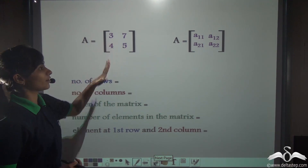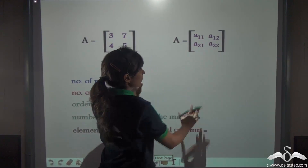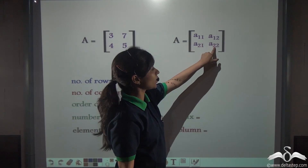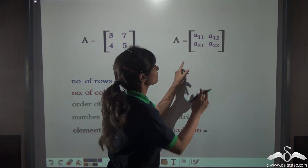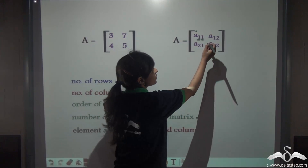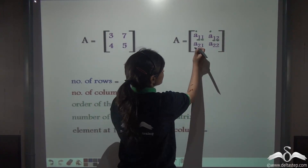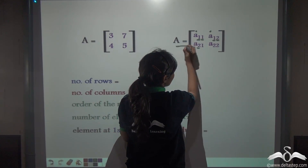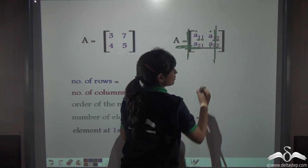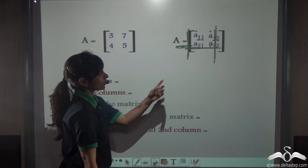Here I have given you a matrix, and a similar matrix with elements written as A11, A12, A21, A22. These elements are actually defined by their position. This element falls in the first row and first column; this one in the first row, second column; this one in the second row, first column; and this one in the second row, second column. Instead of writing them out repeatedly, we can define elements this way.